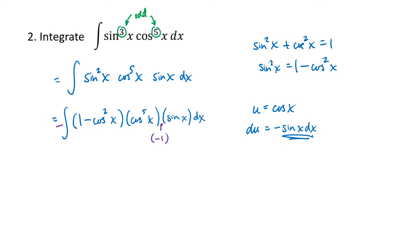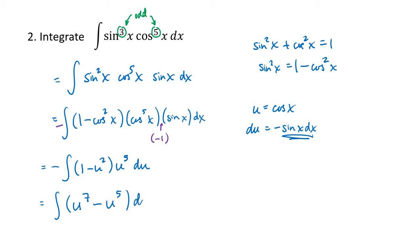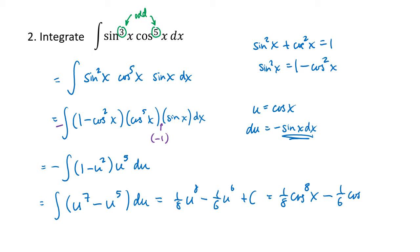So now I have minus the integral of one minus u squared times u to the fifth times du. Distributing the negative and multiplying this out, I end up with u to the seventh minus u to the fifth. That gives me one-eighth u to the eighth minus one-sixth u to the sixth plus c. Substituting back in, I get one-eighth cosine to the eighth of x minus one-sixth cosine to the sixth of x plus c.